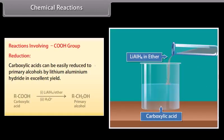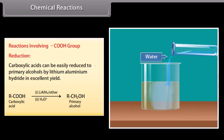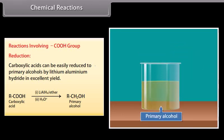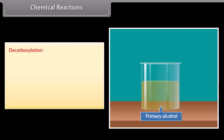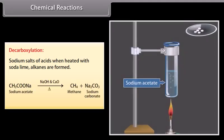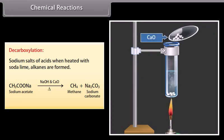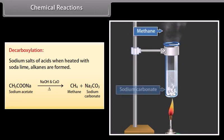Reactions involving the carboxyl group. Reduction: carboxylic acids can be easily reduced to primary alcohols by lithium aluminium hydride in excellent yield. Decarboxylation: sodium salts of acids when heated with soda lime, alkanes are formed. When sodium acetate is heated with sodium hydroxide and calcium oxide, it forms methane and sodium carbonate.